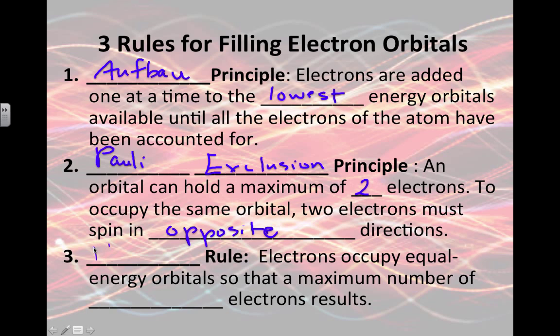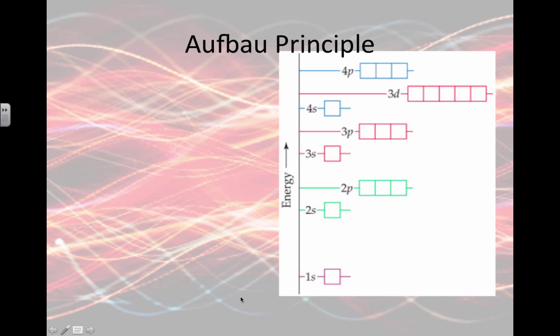Finally, there's Hund's rule. Hund's rule tells us that electrons occupy equal energy orbitals so that the maximum number of unpaired electrons results. So we don't get to pair things up until every orbital has an electron in it.